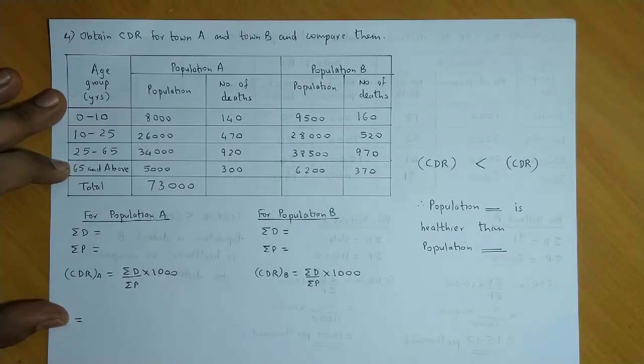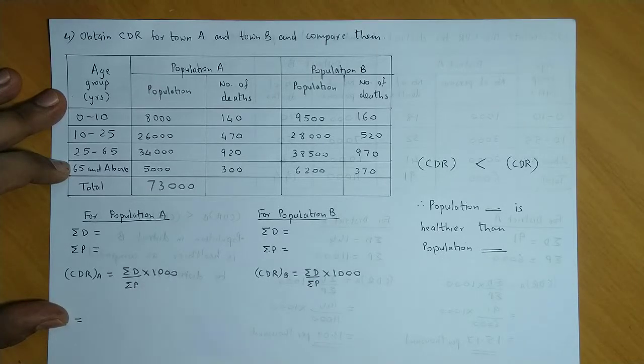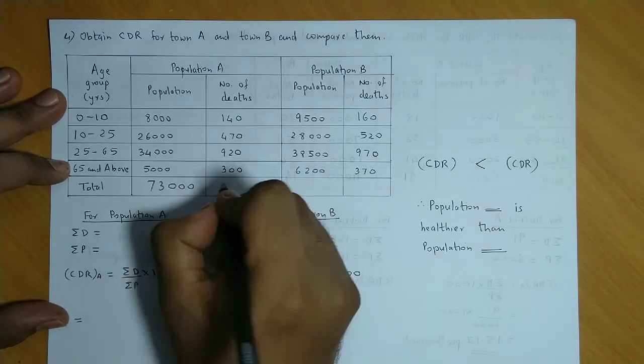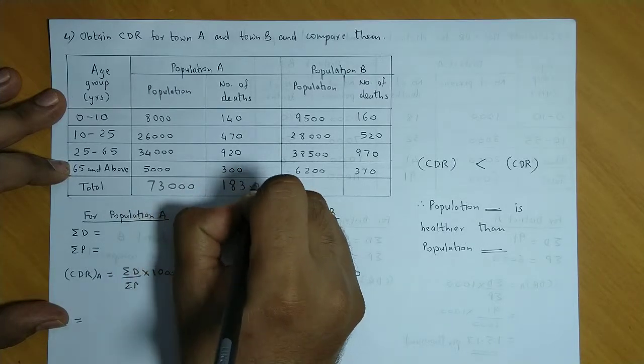Now we have total number of deaths. So we have 140 plus 470 plus 920 plus 300. Now we have total deaths, so 1,830.